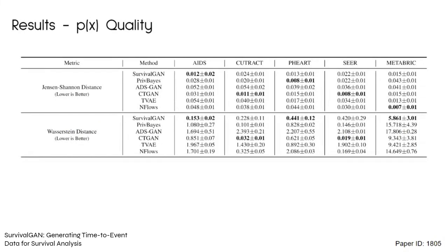First, we look at the quality of the covariate marginal. The aim was to check that SurvivalGAN does not perform significantly worse than other models; since this isn't the main aim, we don't expect it to perform better. Using two traditional metrics, we see that SurvivalGAN is occasionally the best performing model, but never noticeably worse — and that's what we expected.